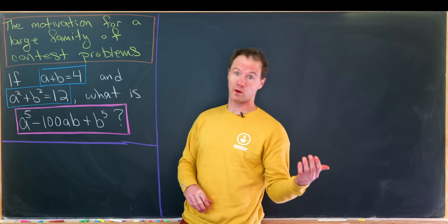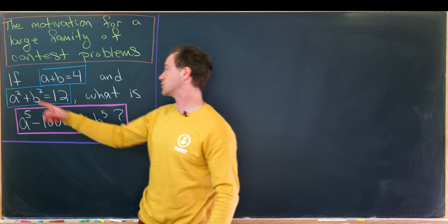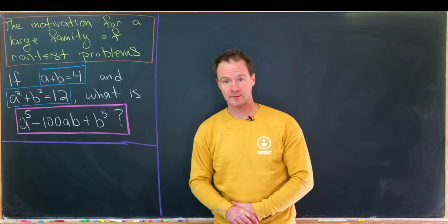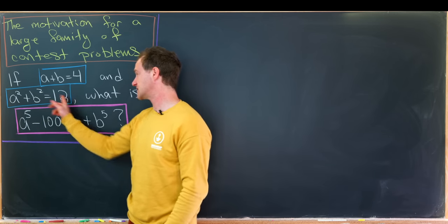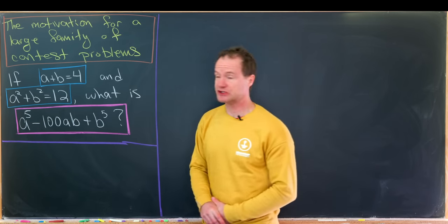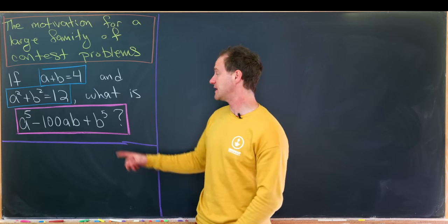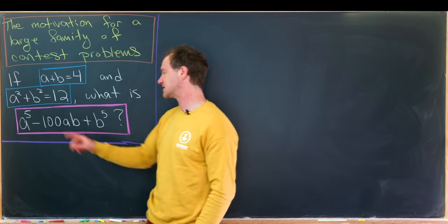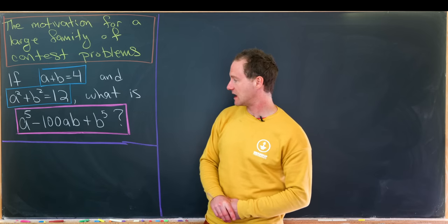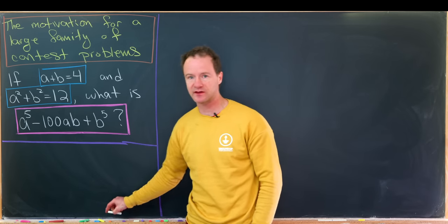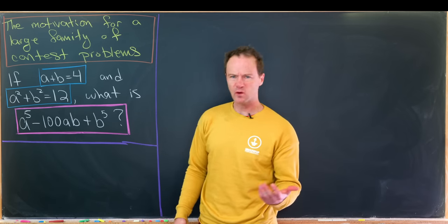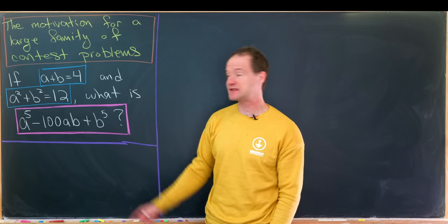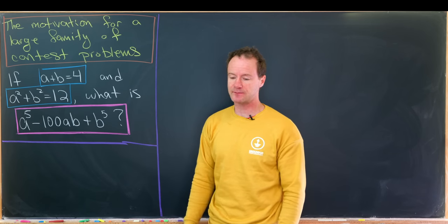The first problem we'll work with is: what happens if a plus b equals 4 and a squared plus b squared equals 12? Can we determine the value of a to the fifth minus 100ab plus b to the fifth? And of course we can, just based off the way this is phrased — it's asked us to determine that.